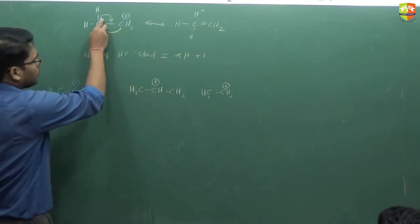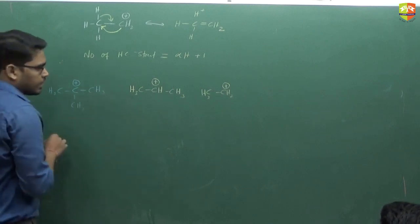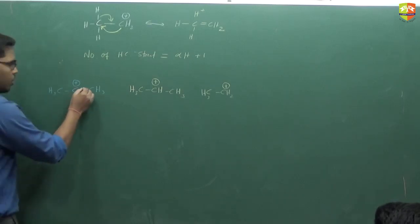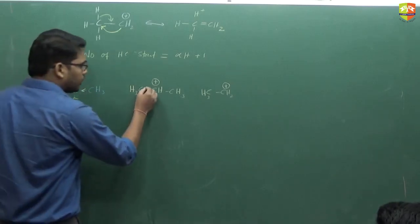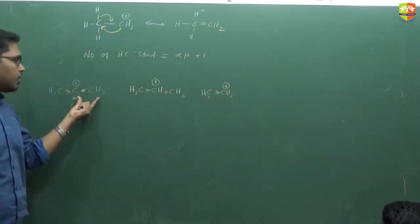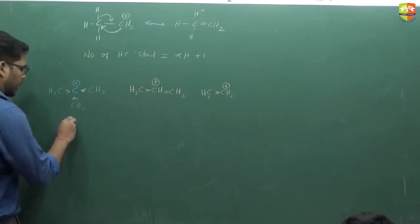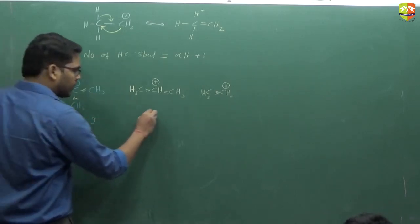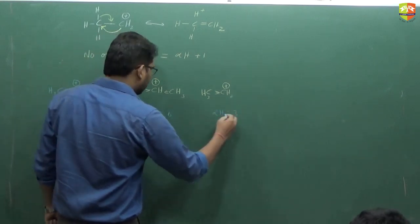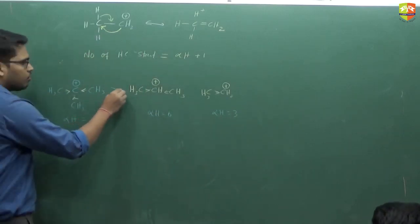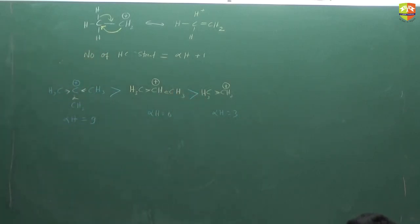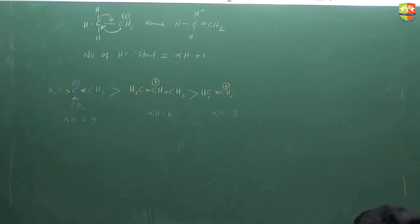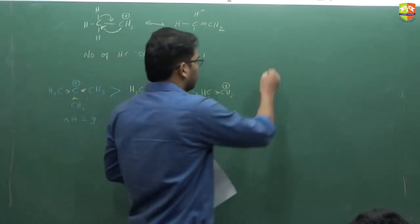Hyperconjugation stabilizes carbocations. Comparing (CH3)3C+, (CH3)2CH+, and CH3CH2+: the first has 3 methyl groups giving a plus-I effect, the second has two, and the third has one. In terms of alpha hydrogens, the tertiary has 9, secondary has 6, and primary has 3. More alpha hydrogens means more hyperconjugative structures and greater stability. Since hyperconjugation dominates I-effect, the tertiary carbocation is most stable.